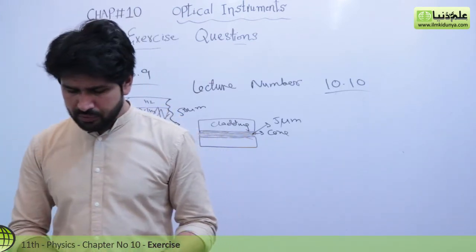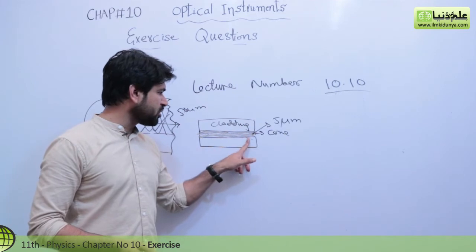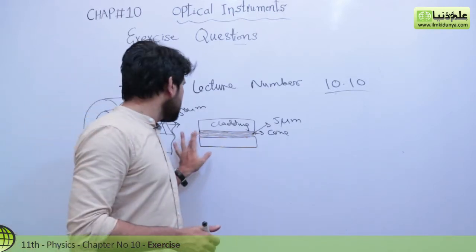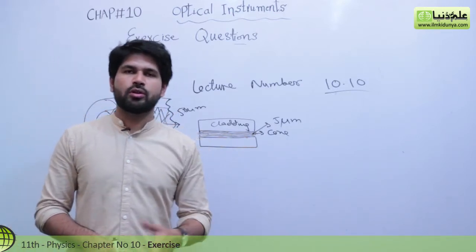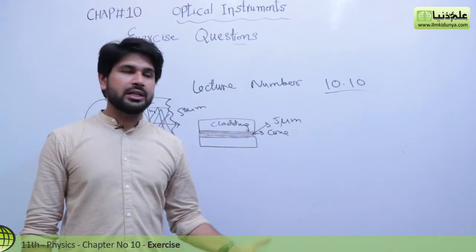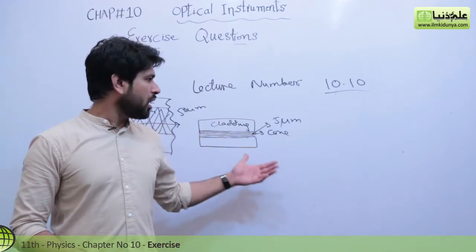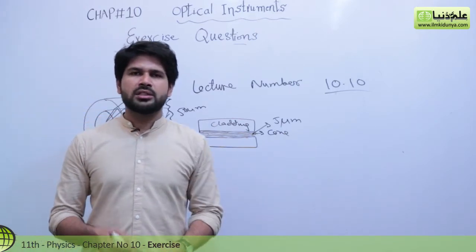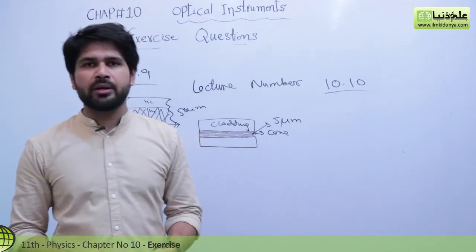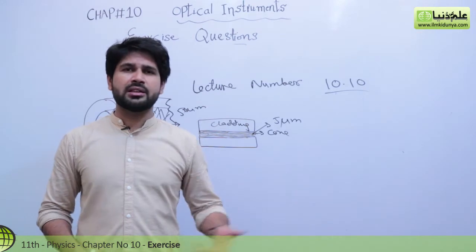We prefer single mode because in single mode index fiber the dispersion of light is minimum, and the transmission length is maximum. We can send and receive 14 TV channels at a time.